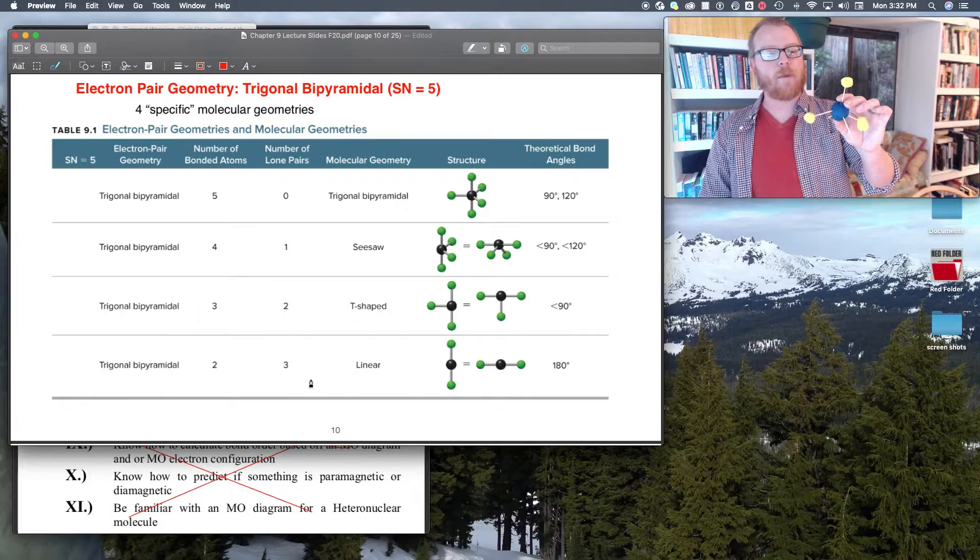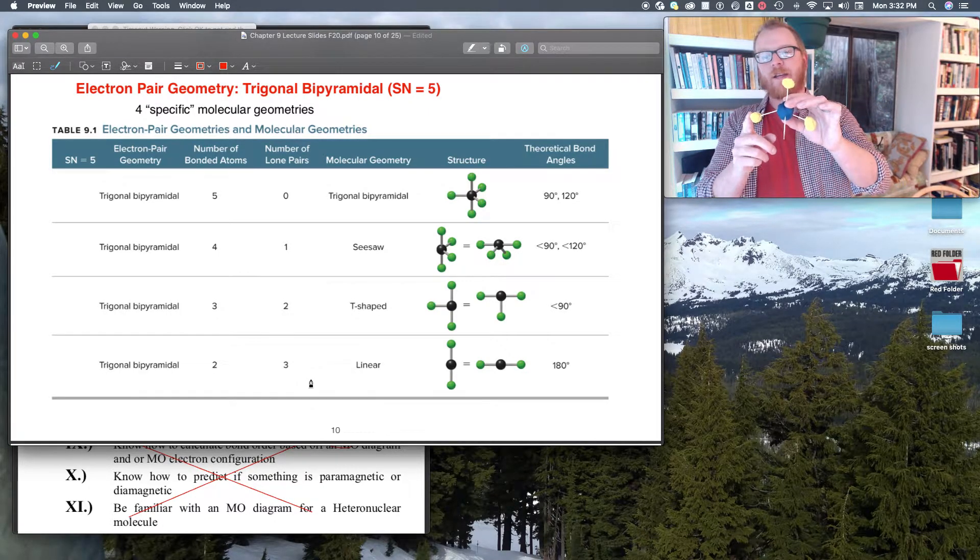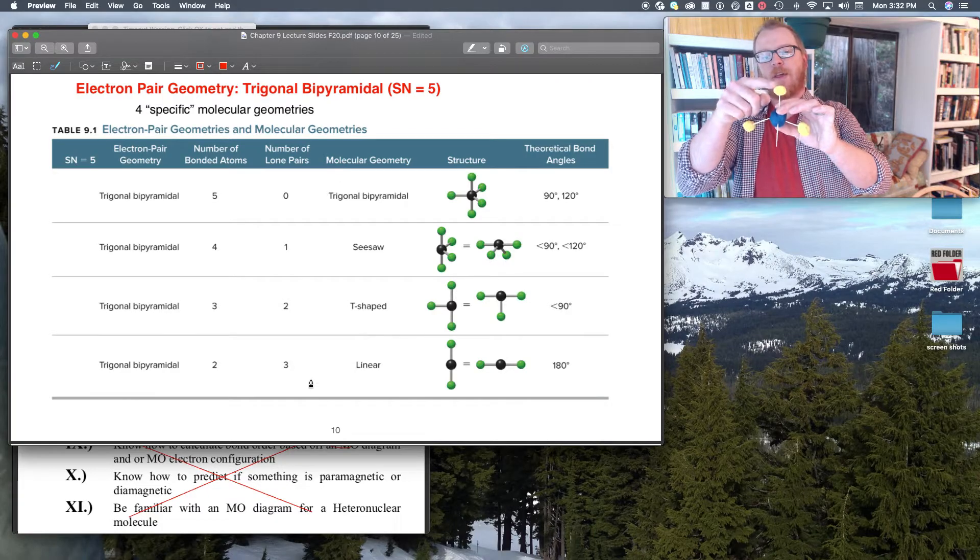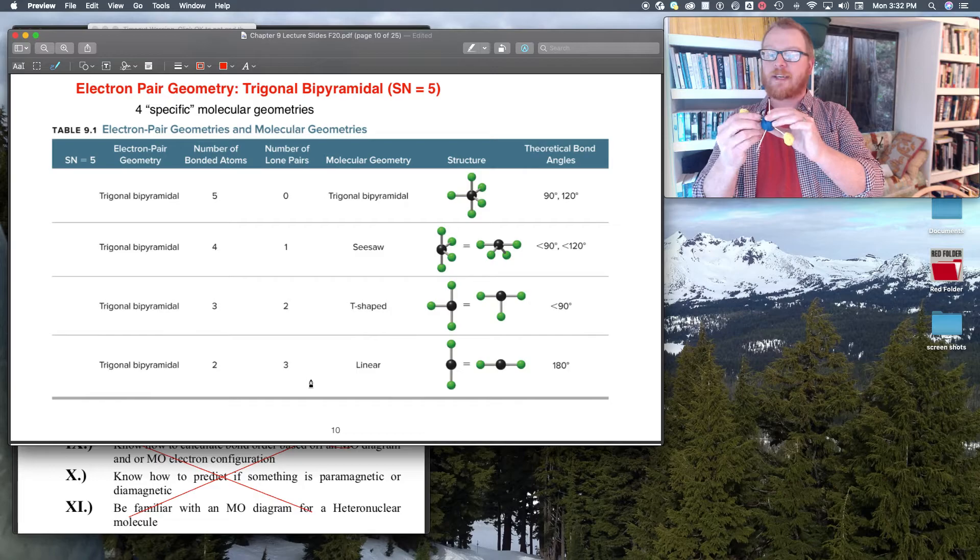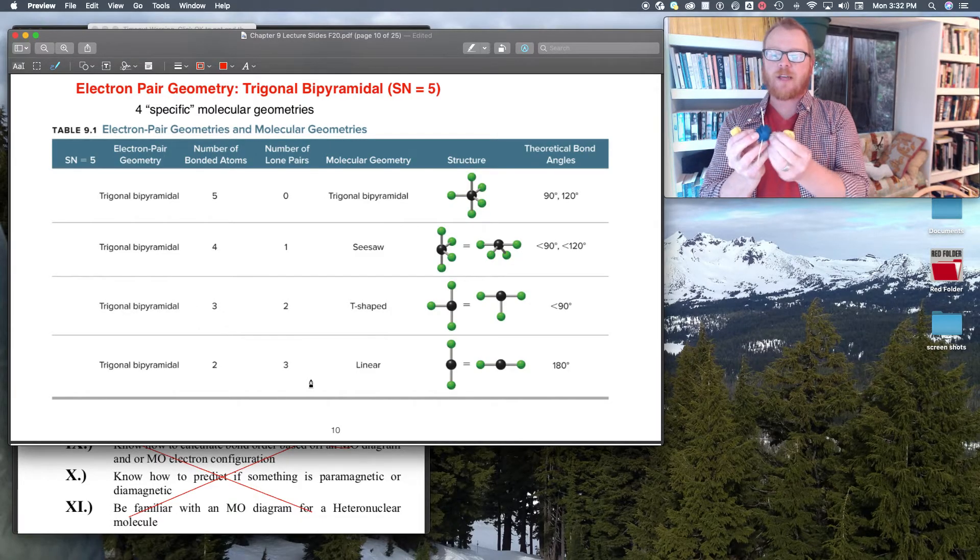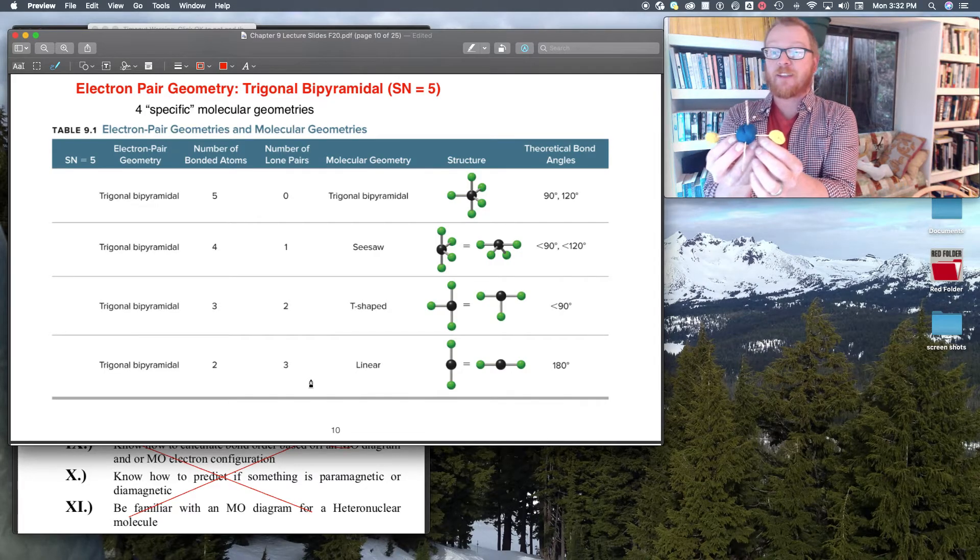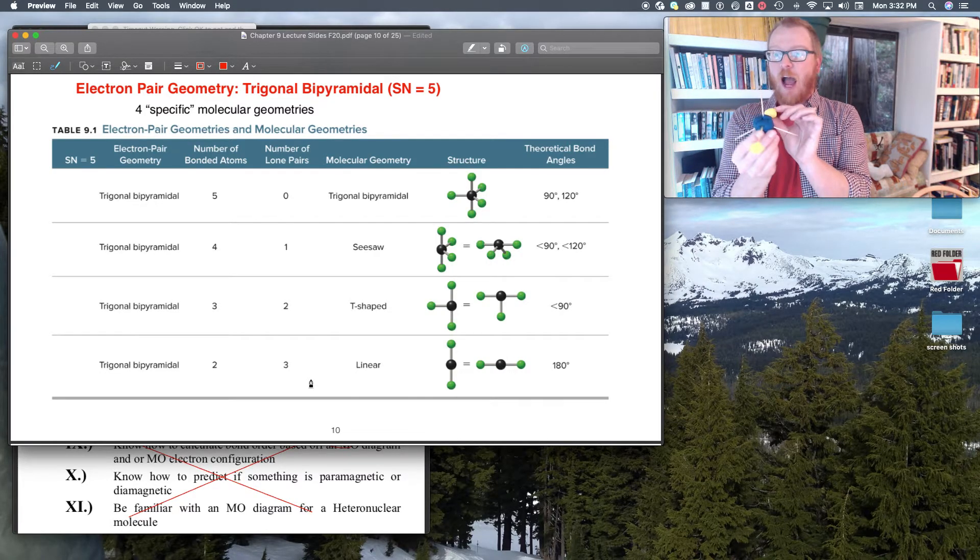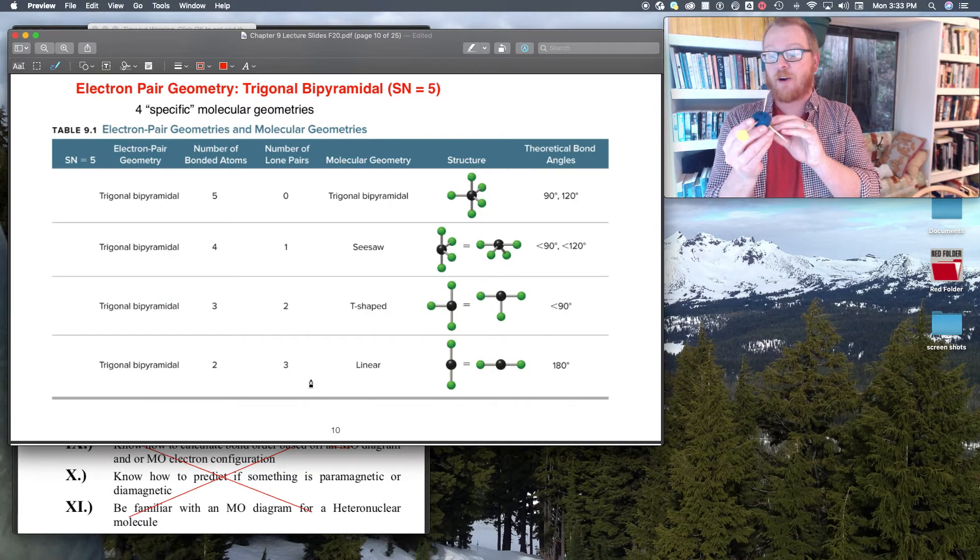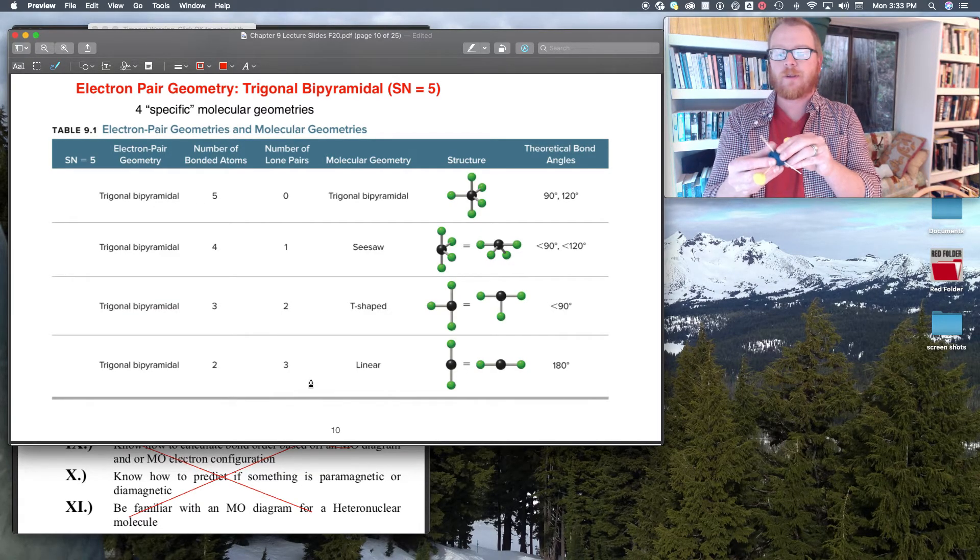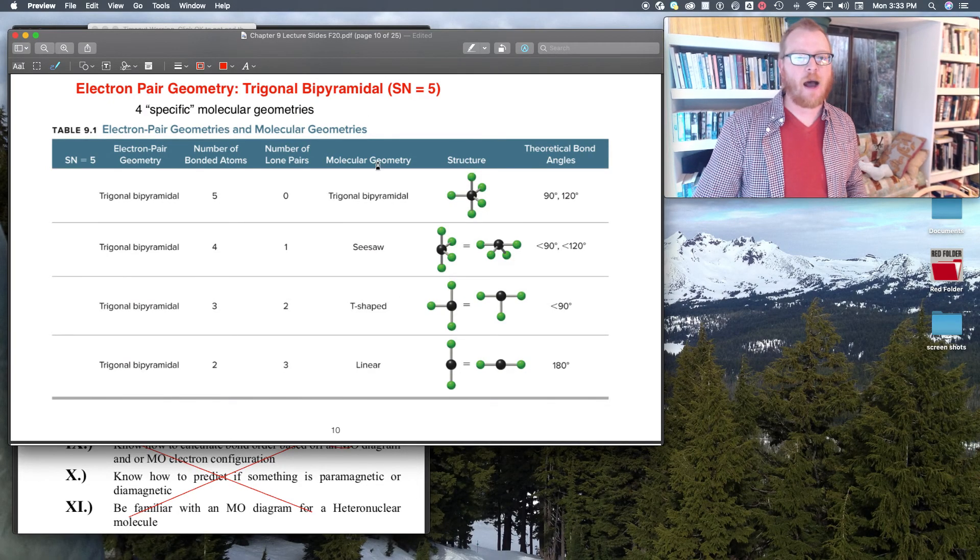And then now finally, if I take away one more, you would think I could take away this one or I could take away this one. This is the one that's going to get taken away, because once again, these atoms and electrons want to spread themselves out as much as possible. So now it just kind of looks like you have a linear molecule. However, you would still have these three lone pairs giving you that trigonal bipyramidal shape.